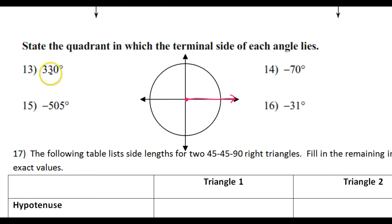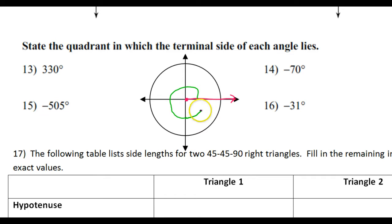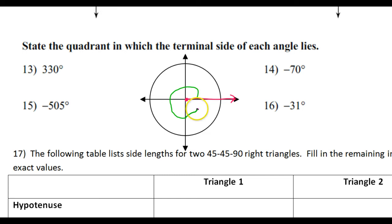330 degrees — because it's positive, I know I'm moving this way counterclockwise. So far, that's 90 degrees, 180 degrees, 270 degrees so far. Now if I went all the way another 90 degrees, that would be a full 360, but that's too far. So I need to back it up 30 degrees and stop right about here.